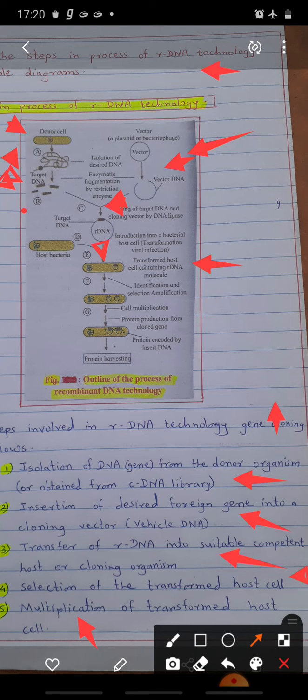Transformation is through Ti plasmid of Agrobacterium tumefaciens. The fourth step is selection of transformed host cells. For isolation of recombinant cells from non-recombinant cells, marker DNA of plasmid vector is used, for example PBR322.